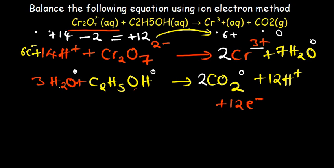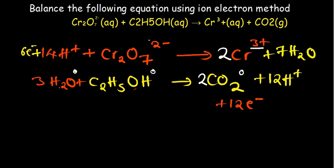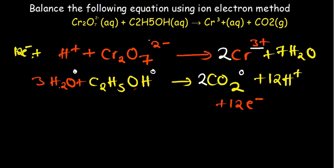The next step is to equalize the number of electrons in the two half reactions. The first has 6 electrons and the second has 12, so we multiply the entire first equation by 2. This makes the electrons 12 in both. The 14 hydrogen atoms become 28, the two Cr2O7²⁻ become two, the 2 Cr³⁺ become 4, and the 7 water molecules become 14.